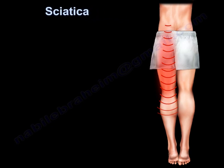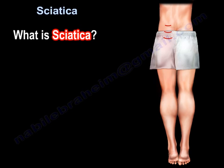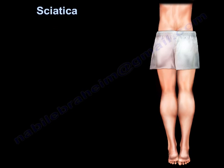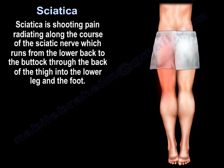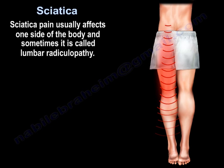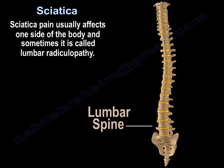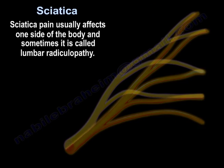Sciatica. What is sciatica? It is shooting pain radiating along the course of the sciatic nerve, which runs from the lower back to the buttock, through the back of the thigh, and into the lower leg and foot. Sciatica pain usually affects one side of the body, and sometimes it is called lumbar radiculopathy.